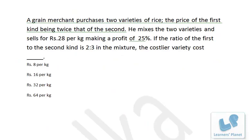Now let's see this problem. A grain merchant purchases two varieties of rice, the price of the first kind being twice that of the second. He mixes the two varieties and sells for rupees 28 per kilogram making a profit of 25%. If the ratio of the first to the second kind is 2 is to 3 in the mixture...